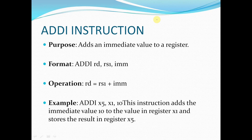The ADDI instruction's purpose is to add an immediate value to a register. The format is: ADDI RD, RS1, immediate — and the operation is RD = RS1 + immediate. For example, ADDI x5, x1, 10 adds the immediate value 10 to the value in register x1 and stores the result in x5.